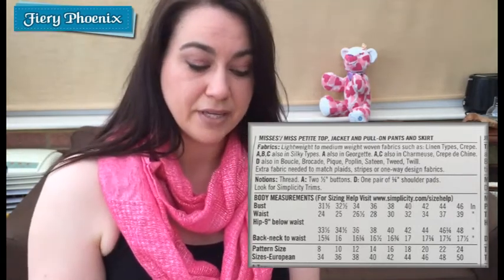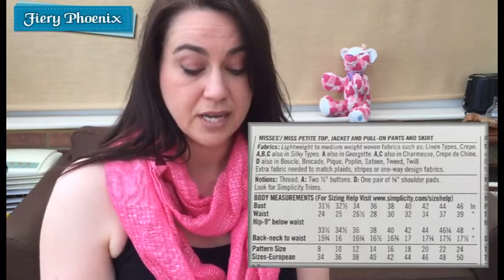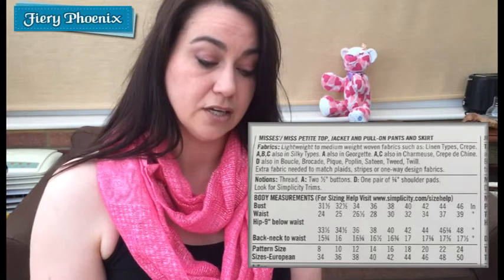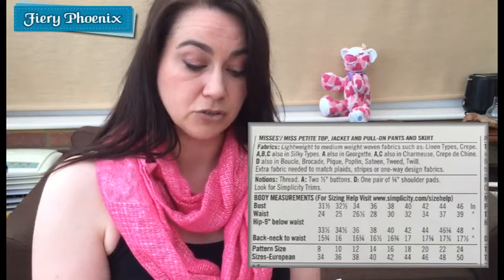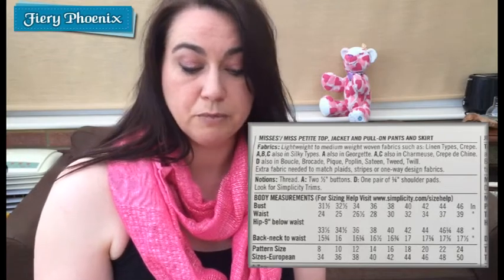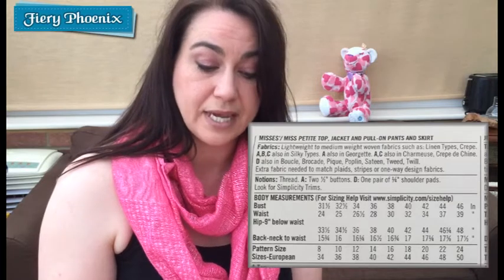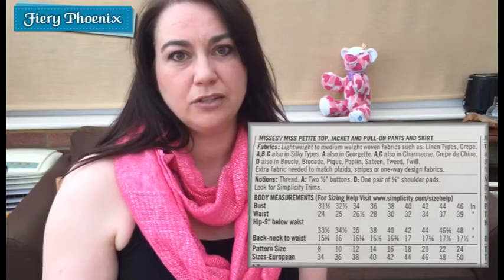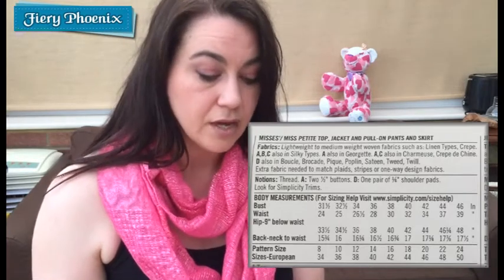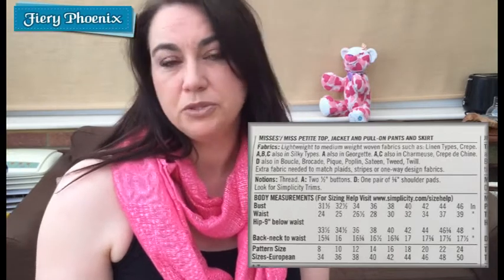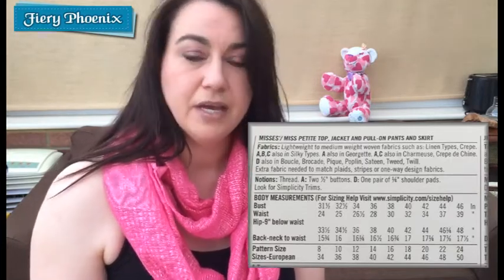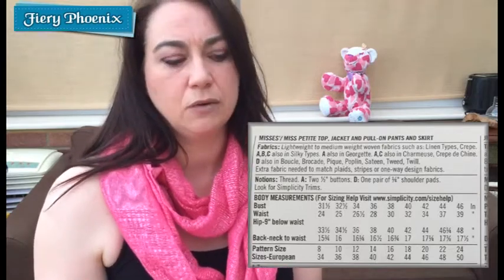It goes on to talk about fabrics — lightweight to medium weight wovens such as linen or crepe for specific garments. For the top, trousers, and skirt it recommends silky types; the top can also be in Georgette. For the jacket it describes fabrics such as bouclé, brocade, piqué, poplin, sateen, twill, or tweed. It also mentions whether you need to allow extra quantities of fabric if you are matching plaids, stripes, or one-way designs. Notions are the extra bits and bobs you need to complete a pattern — zips, buttons, shoulder pads for the jacket, braid, trim, or interfacing.